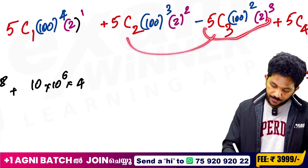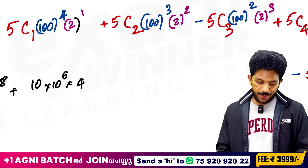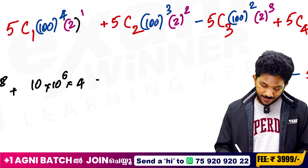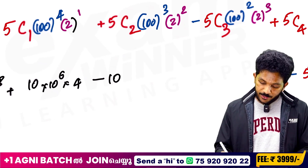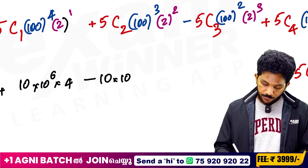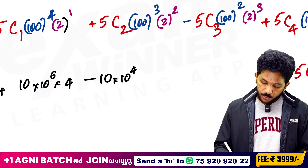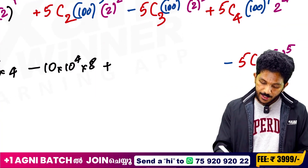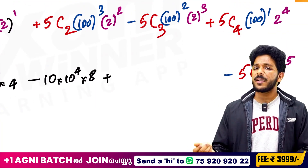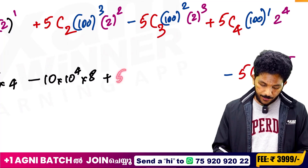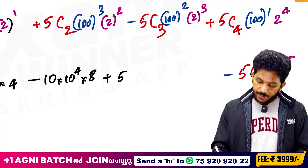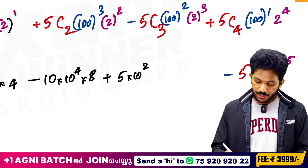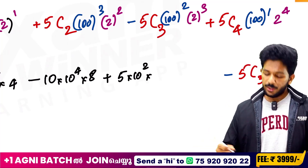5C3 equals 5C2. 2 and 3 is equal to 5. 10 raised to 2 is equal to minus 10. 10 raised to 2 is 4. 2 cubed is 8. And 5C4 equals 5C1 equals 5. 5 is equal to 5, 10 raised to 1. 100 raised to 1 equals 10 squared. 2 raised to 4 equals 16.